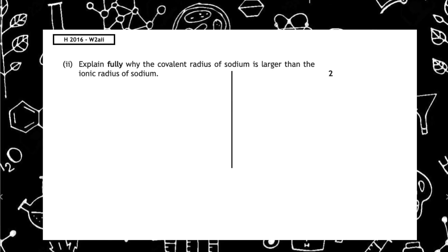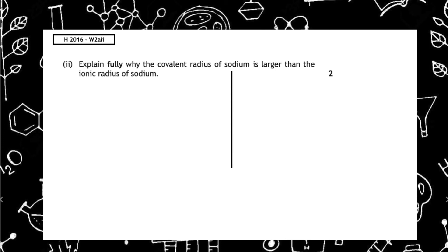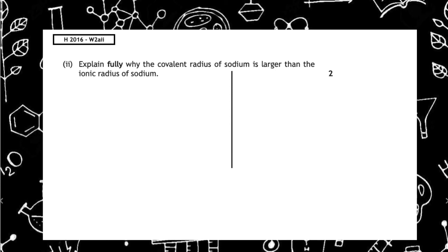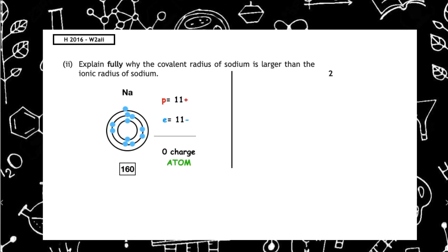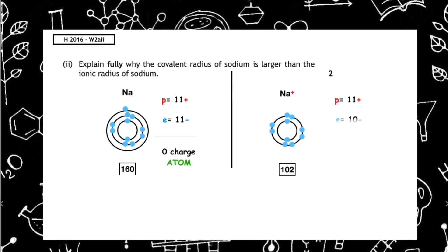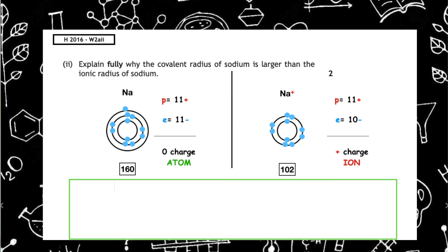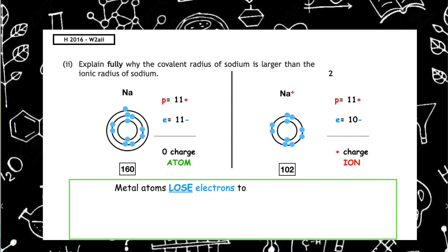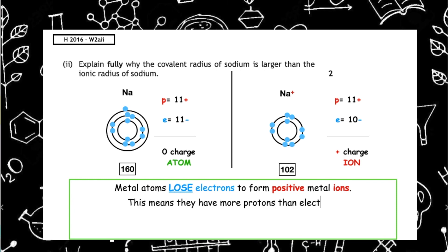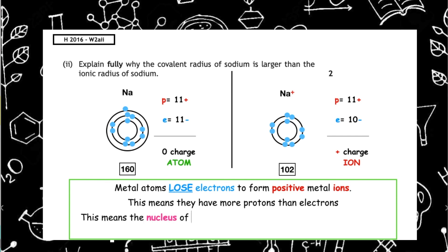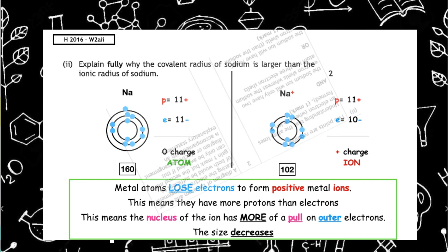Part two of the 2016 question asks us to explain fully why the covalent radius of sodium is larger than the ionic radius of sodium. Drawing the electron arrangement diagram and using the data booklet, we can see that the sodium ion has lost an electron. Metal atoms always lose electrons to form positive metal ions, meaning they have more protons than electrons. The nucleus therefore has more of a pull on the outer electrons, and the size decreases.